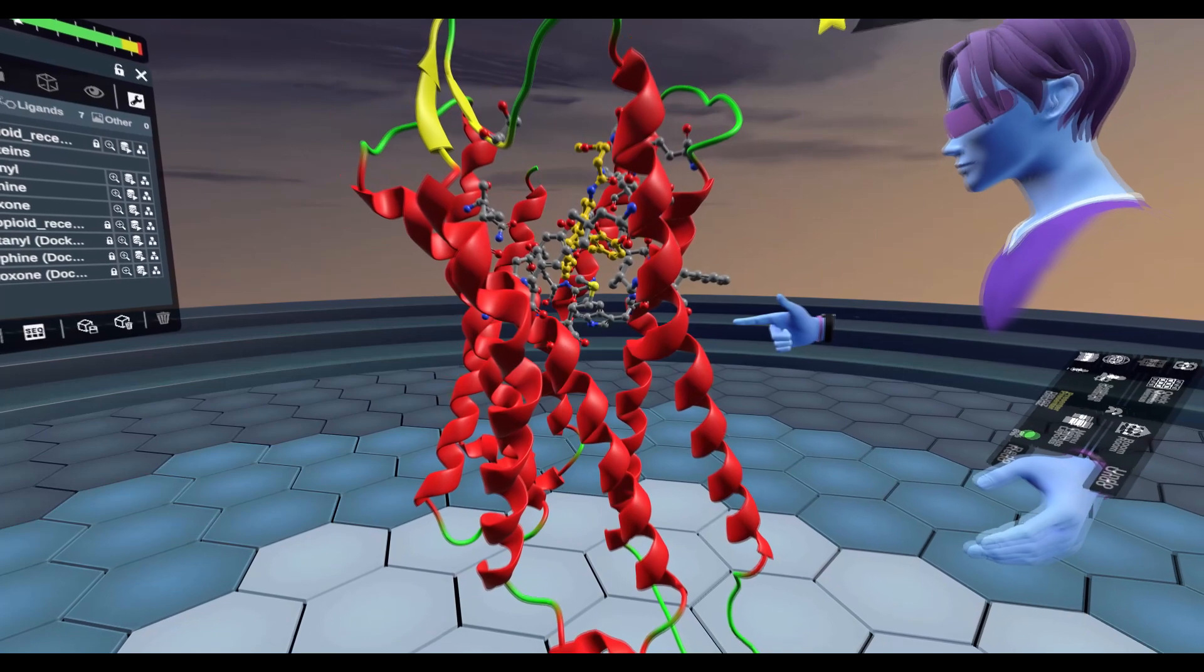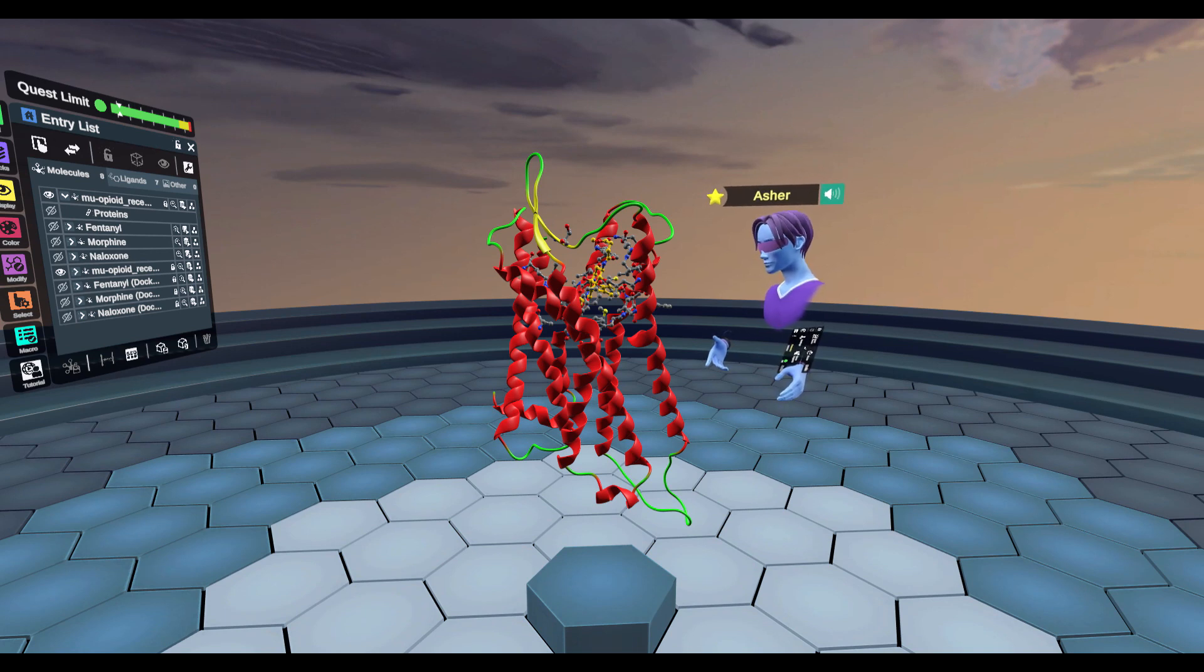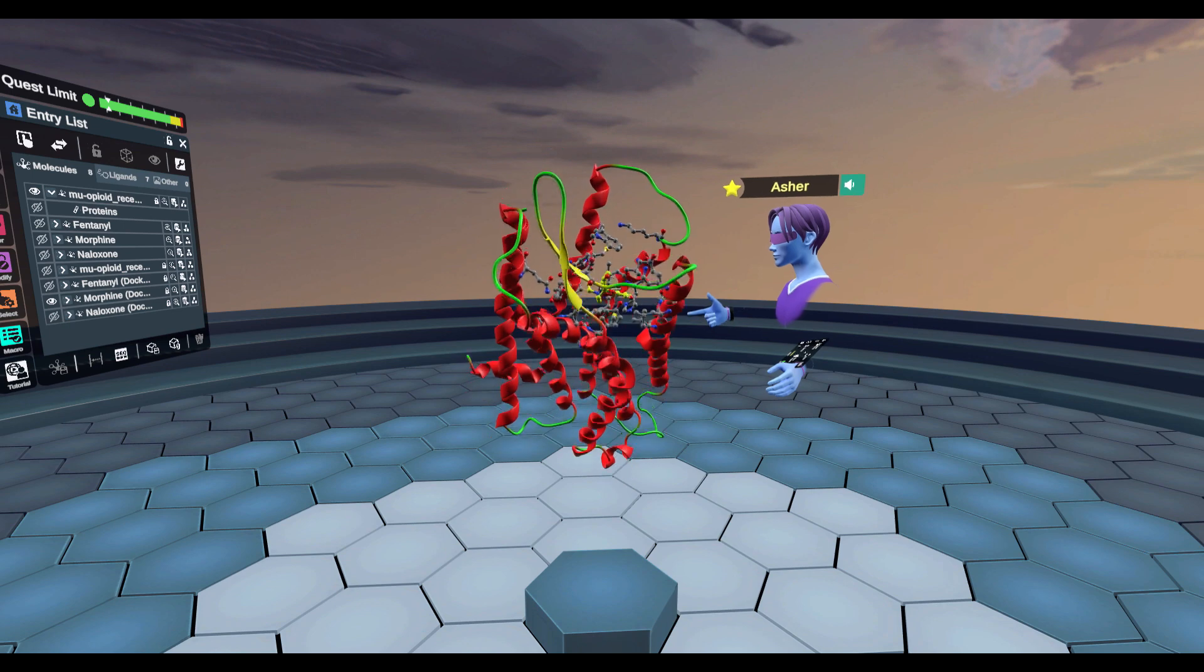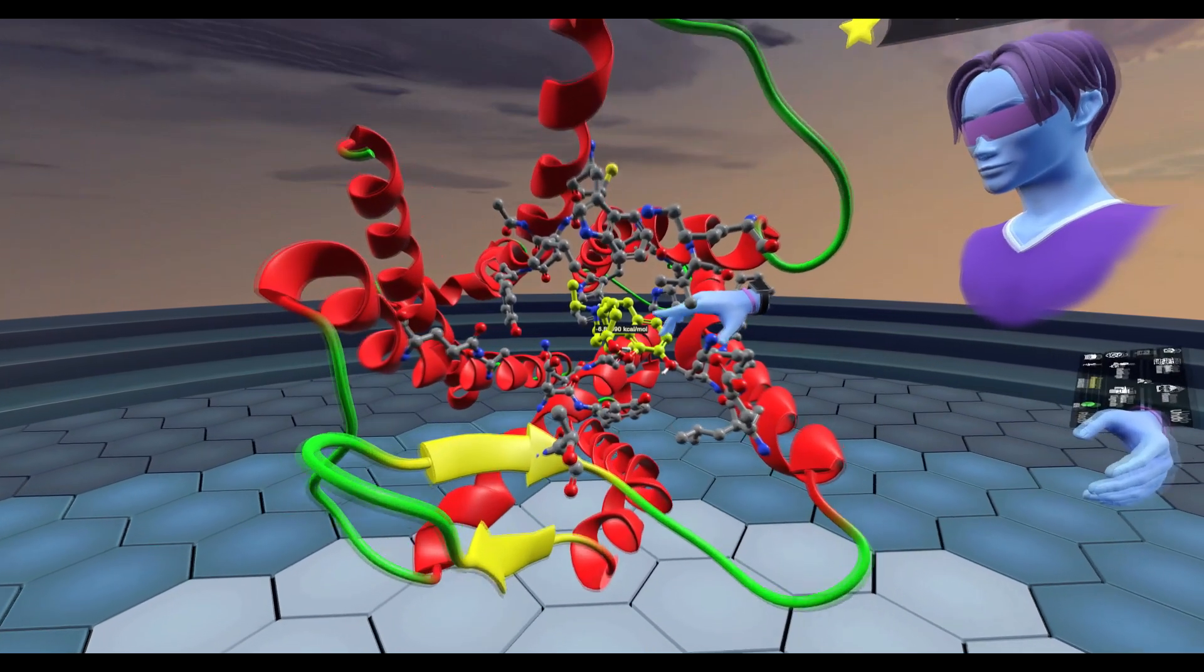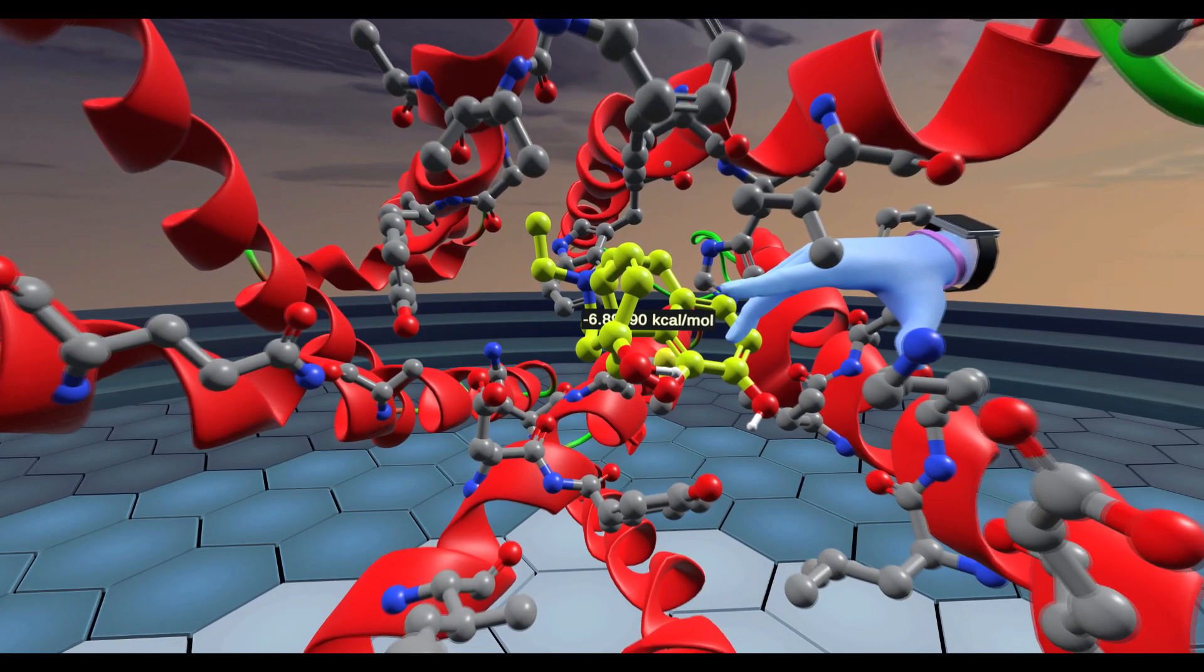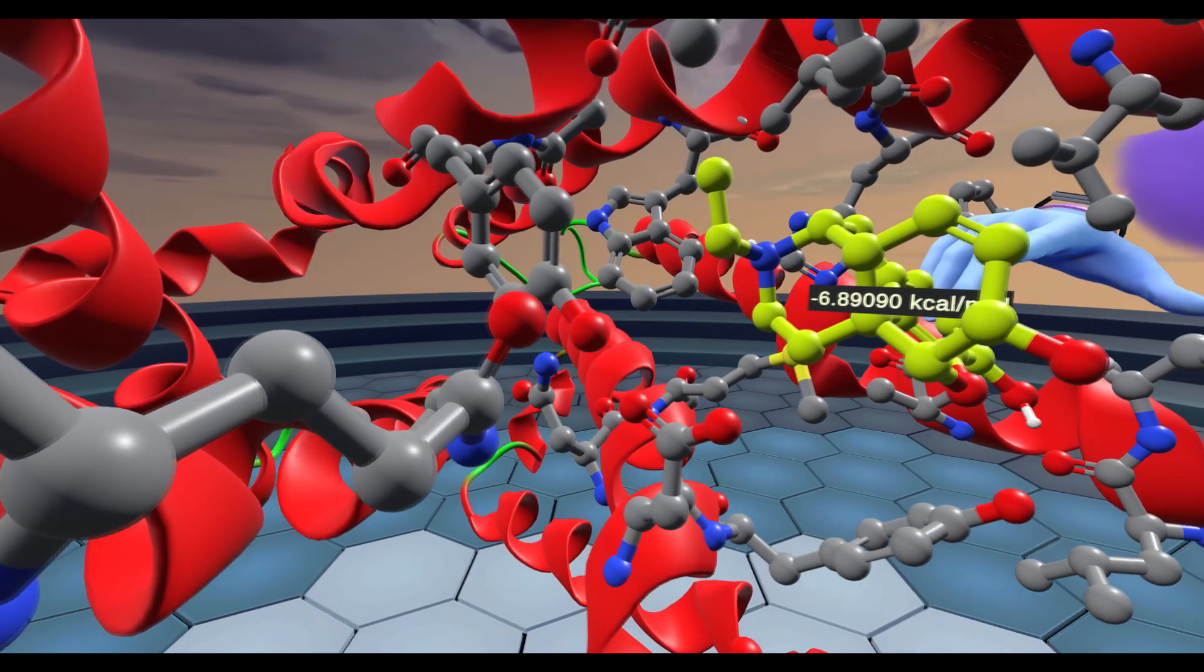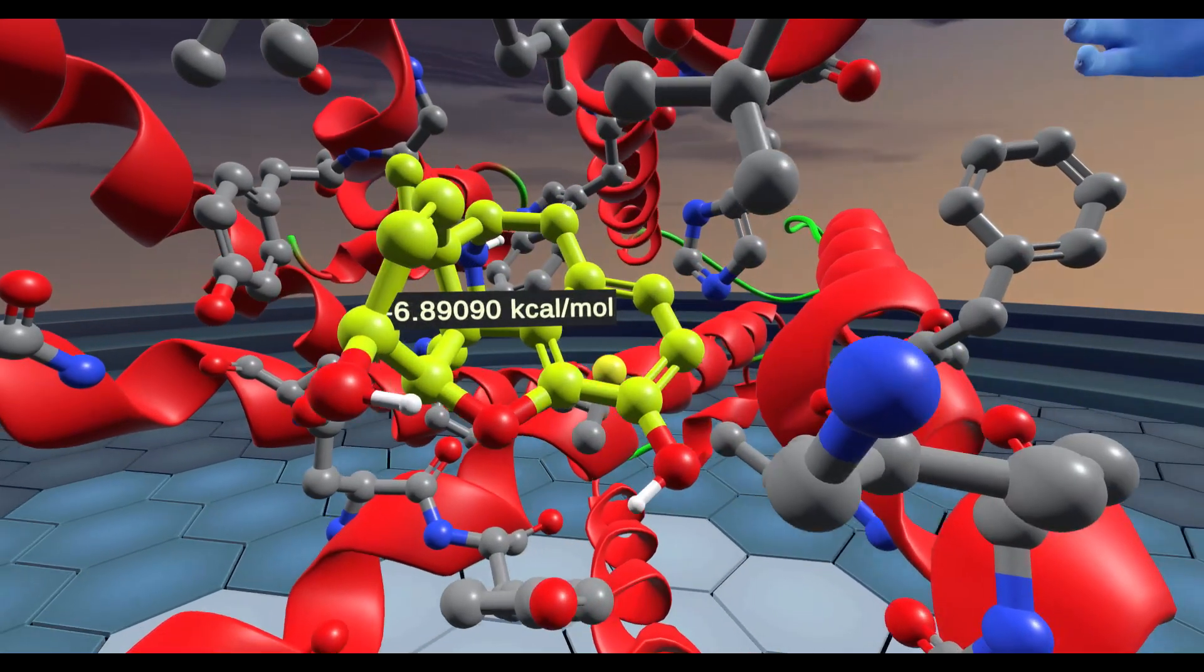I think what might be useful is actually looking at some docked poses of different opioids inside the receptor to develop understanding about why naloxone is such an effective way of kicking opioids out of the orthosteric binding pocket of receptors. Now I've got morphine docked inside of the orthosteric site of the mu opioid receptor. We can actually see the binding score. Binding score is a crude measure of binding affinity at the receptor. It's not an accurate way of measuring it, but it's a very crude measurement of how well the drug fits inside the receptor. And that has a binding K-cal score of 6.89 kilocalories per mole, and that is morphine inside of there.